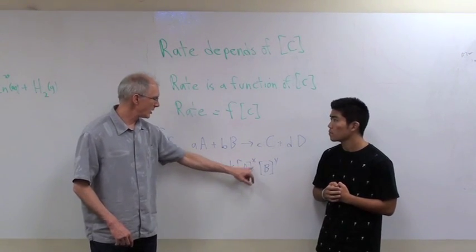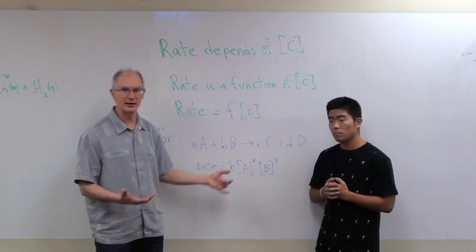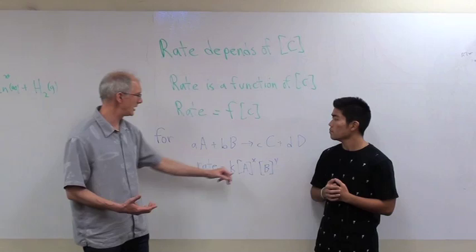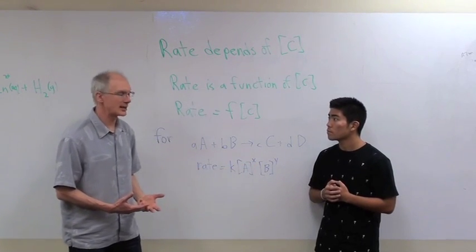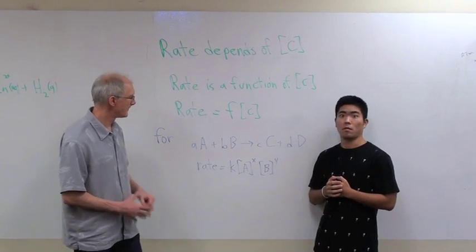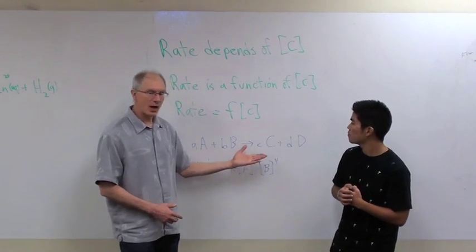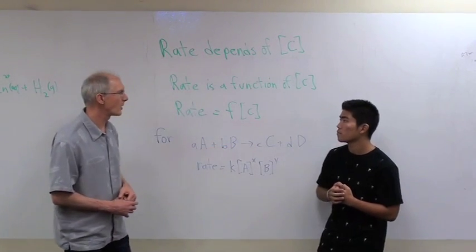There's a concentration of A raised to some power, and this can vary. That power can be zero, meaning it doesn't depend on A. It could be one, it could be two. It can even be things like a half or sometimes negative one, which is kind of weird. And then the other reagent, B. Sometimes, in fact, we can have products in this expression as well.